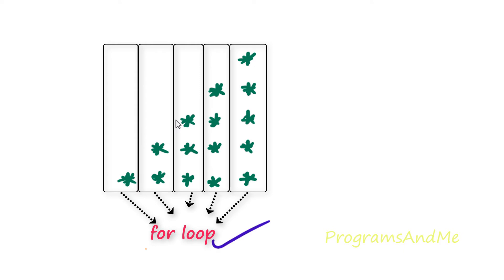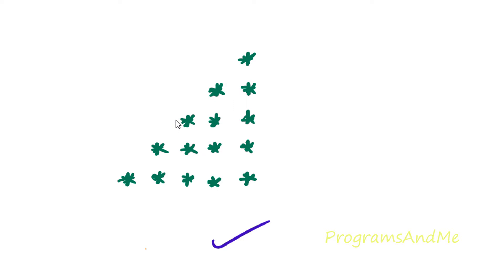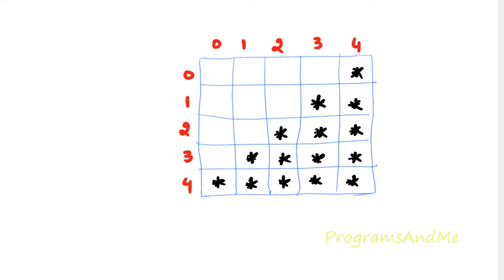In the nested for loop there will be an outer for loop and an inner for loop. Here the outer for loop will be the for loop for rows, and inside that we will take the for loop for columns. We will print the star in the different columns in the required column, and after completing that row we will go to the next row. That's why we need the outer for loop for rows and inside that the for loop for columns. Let's take the nested for loop.